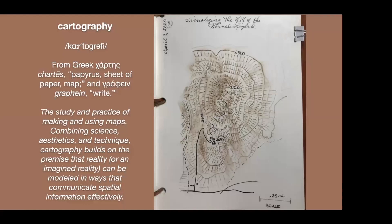What is cartography? Interestingly, it comes from the Greek — meaning papyrus or sheet of paper — and 'graphen,' meaning to write. It is the study, practice, making, and using of maps. Combining science, aesthetics, and technique, it builds on the premise that reality — or an imagined reality — can be modeled in ways that communicate spatial and nature information effectively.